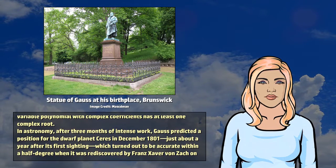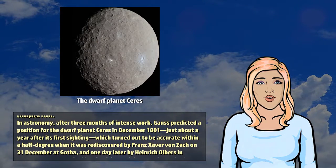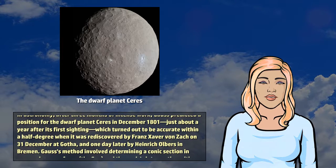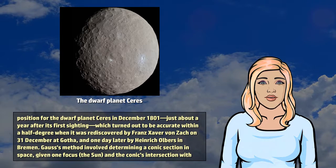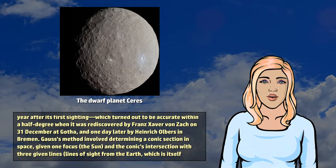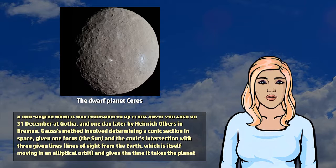In astronomy, after three months of intense work, Gauss predicted a position for the dwarf planet Ceres in December 1801, just about a year after its first sighting, which turned out to be accurate within a half degree when it was rediscovered by Franz Xaver von Zach on 31st of December at Gotha, and one day later by Heinrich Olbers in Bremen.